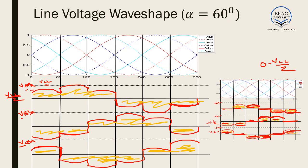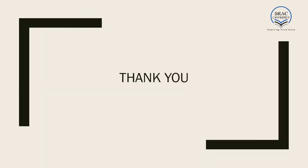That's all for AC-AC voltage controllers. The input is 3-phase AC and the output, both in terms of line voltage and phase voltage, are purely AC signals. In the next lectures, we will be learning about cycloconverters, where we will learn about how to control the frequency of the output AC signal. Thank you.